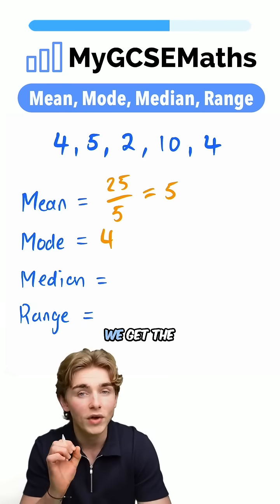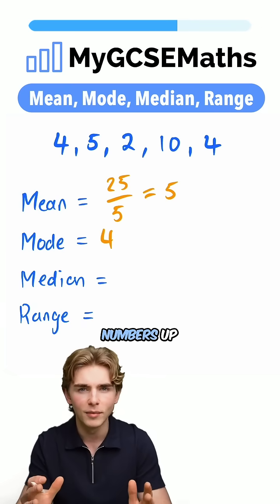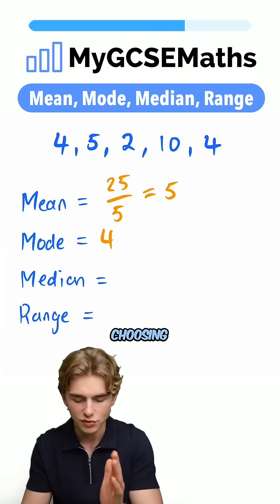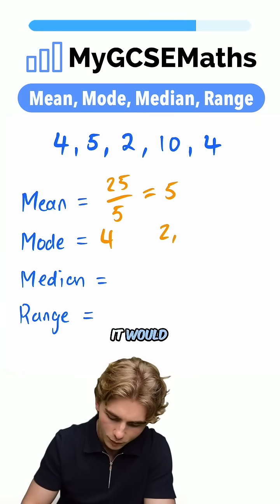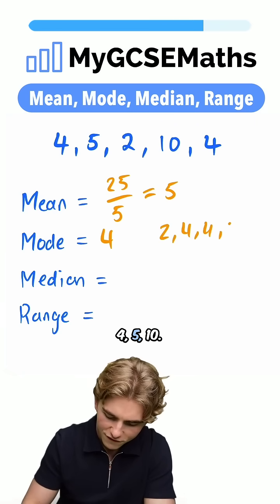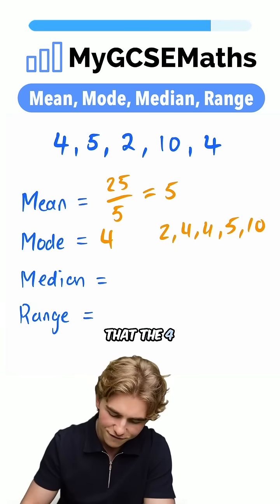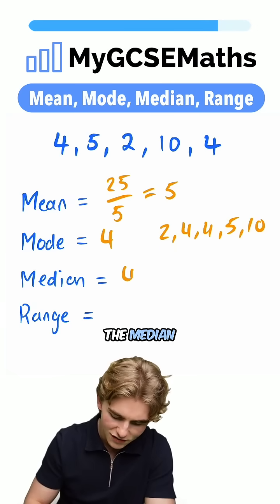The median. What's the median? We get the median by lining the numbers up from smallest to biggest, and then choosing the middle one. Here, if we lined them up from smallest to biggest, it would be 2, 4, 4, 5, 10. We can see that the 4 is in the middle, so the median is going to be 4.